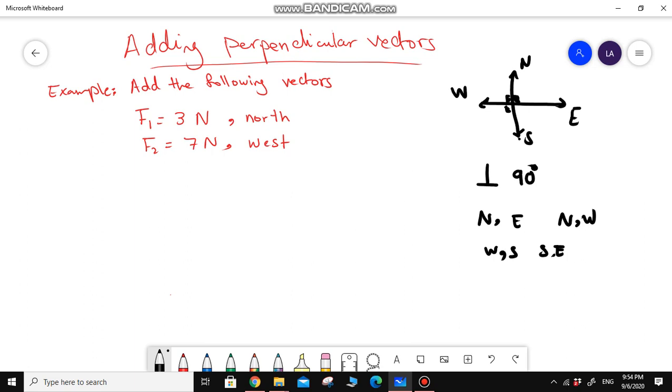If you have two vectors that are perpendicular, like in my example here, I have F1 is 3 newton toward the north and F2 is 7 newton toward the west. One is acting north and the other one is acting west, so for sure they are perpendicular.